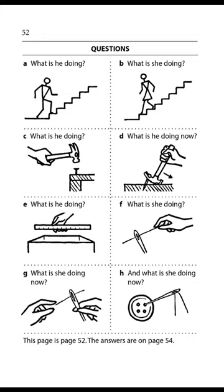Page 52. Questions. What is he doing? He is going up the steps. What is she doing? She is going down the steps. What is he doing? He is putting a nail in with a hammer. What is he doing now? He is taking a nail out with a hammer. What is he doing? He is measuring a box. What is she doing? She is putting a thread through the hole in a needle. She is taking the end of the thread between her finger and thumb. She is putting a button on with a needle and thread.